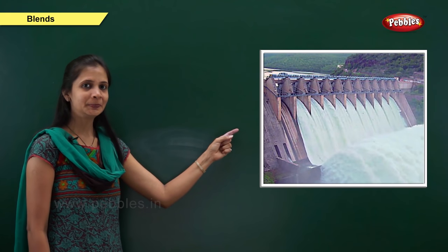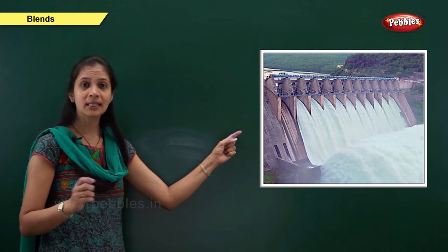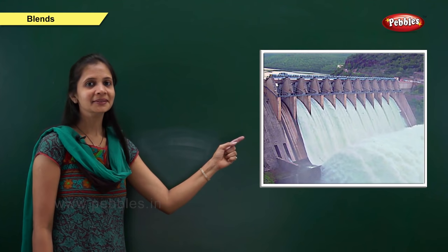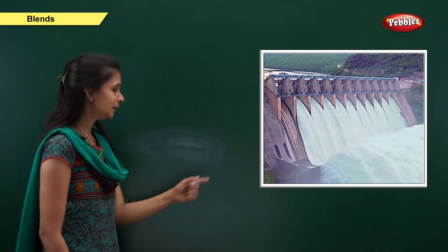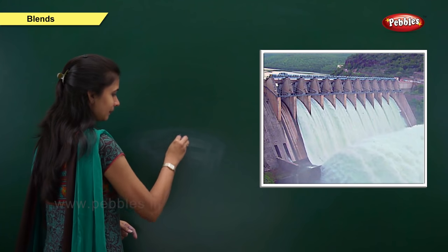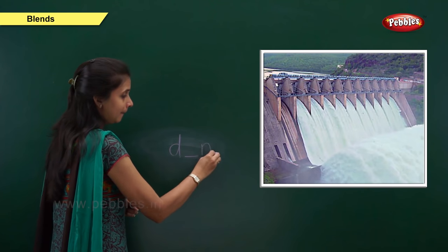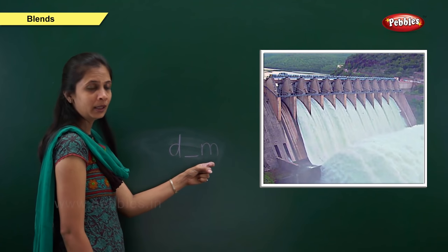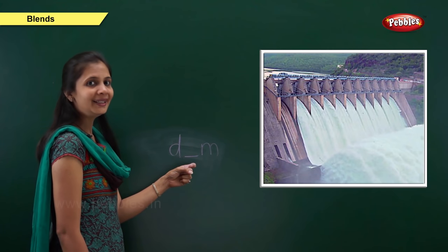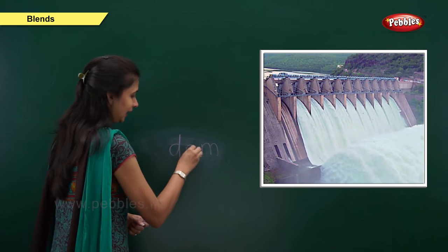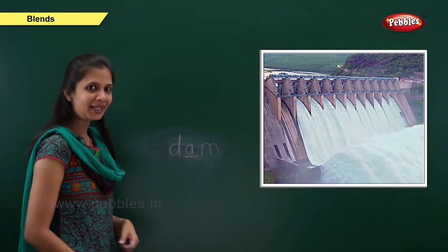Next one. Which picture is this? Yes, it is the picture of dam. What is the sound of this word? It is da, a, m — dam. The letter is d. The sound is m, the letter is m. The middle sound is 'a'. The letter is vowel a. So: d, a, m — dam.